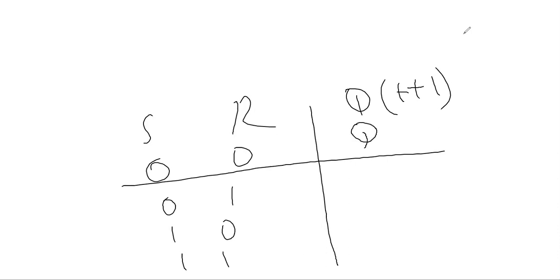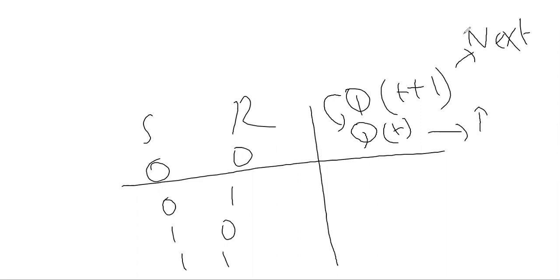The previous state Q of t will be your next state — it will continue. This is the next state and this is the past state. Whenever S and R are equal to zero, your state will be retained — the past state will be retained.